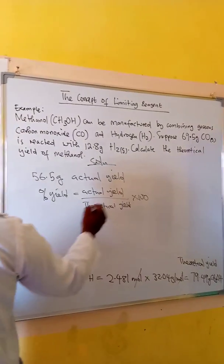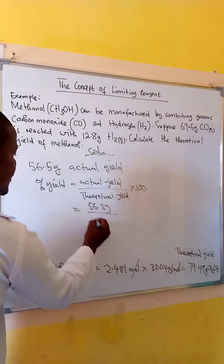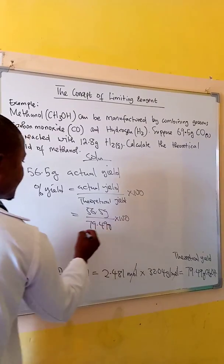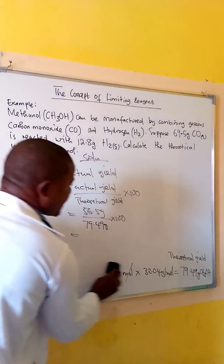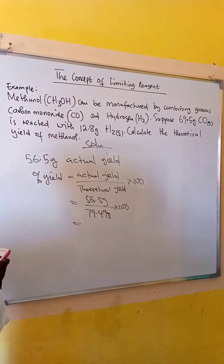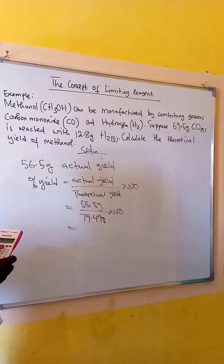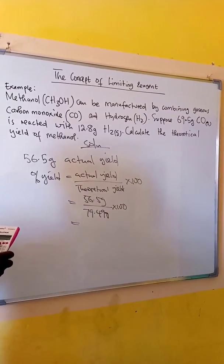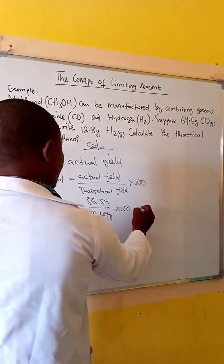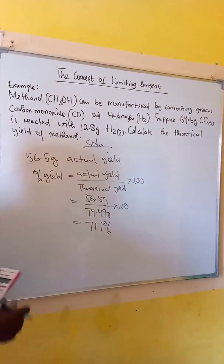We can now calculate the percent yield, given as actual yield over theoretical yield times 100. Our actual yield is 56.5 grams over the theoretical yield of 79.49 grams, multiplied by 100. This gives us 71.1 percent, which is our percentage yield.